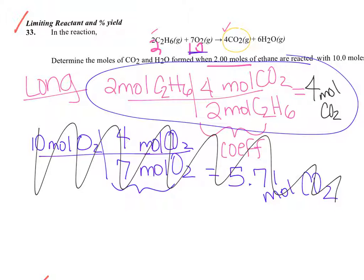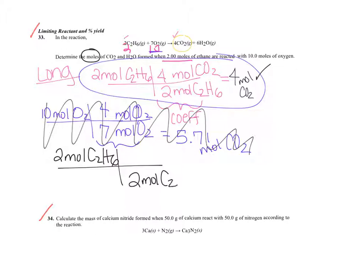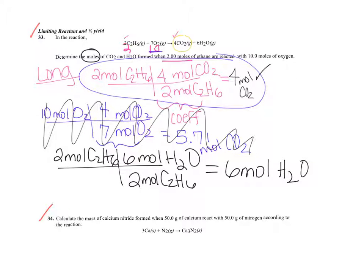Since ethane is the limiting reactant, we don't care about the oxygen anymore. We continue with the ethane information only. They're only asking for moles, which is nice. So we're done with carbon dioxide at four moles. We just have to do the same thing for water. Water has a coefficient of six, so two times six divided by two is six moles of H₂O.